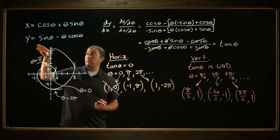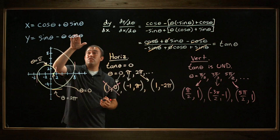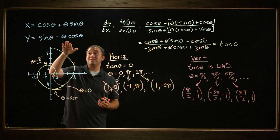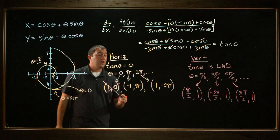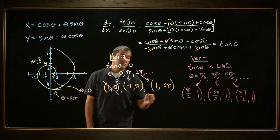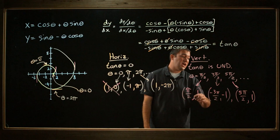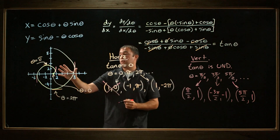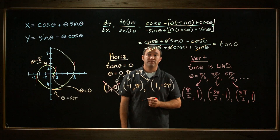So for this curve, x equals cosine theta plus theta sine theta and y equals sine theta minus theta cosine theta, we have two points where the tangent line is horizontal and three points where the tangent line is vertical in the graph that we're given. Thanks for watching.